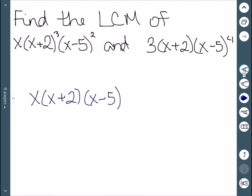In the second one, we have a 3 that we don't already have. Now we look at exponents. The highest power on x plus 2 is 3. The highest power on x minus 5 is 4. So there's the LCM.